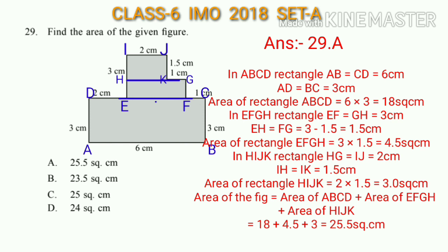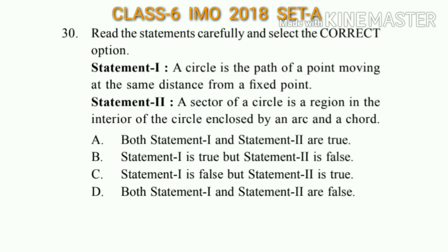Question number 30: Read the statements carefully and select the correct option. Statement I: A circle is the path of a point moving at the same distance from a fixed point. Statement II: A sector of a circle is a region in the interior of the circle enclosed by an arc and a chord. The answer will be option B — Statement I is true but Statement II is false.